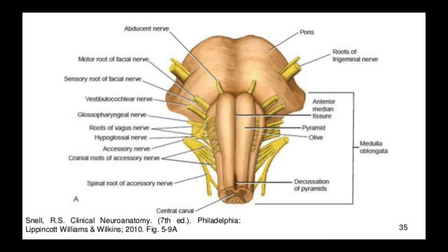Looking at the anterior aspect of the medulla: the anterior median fissure is a deep depression at the anterior side and center of the medulla. To the right and left of it, we get a vertical swelling — these are called pyramids. The pyramids are long, tube-like swellings on either side.